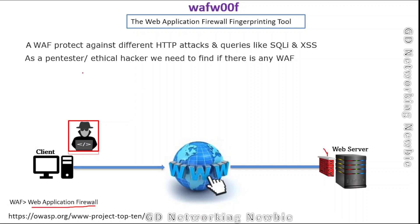As a penetration tester or ethical hacker, we need to find out if our target is using any WAF. An organization may hire us and give us a target, and first we may need to determine if those servers are using some kind of web application firewall. Once we have that information, we can come up with tricks and tools to evade or bypass that firewall so we can access the web application and find vulnerabilities.